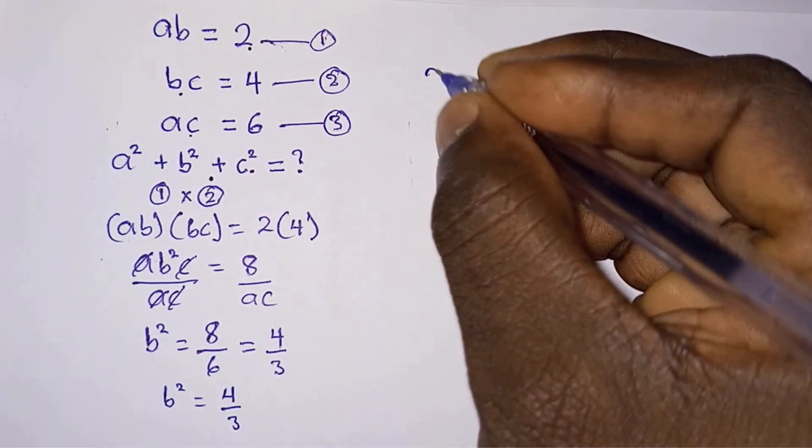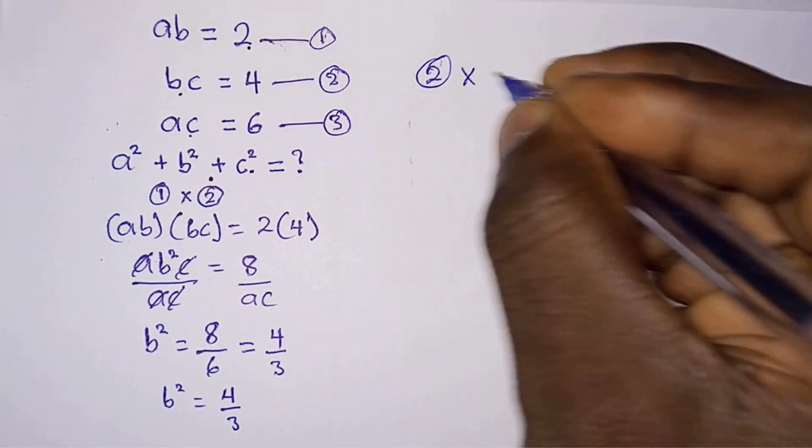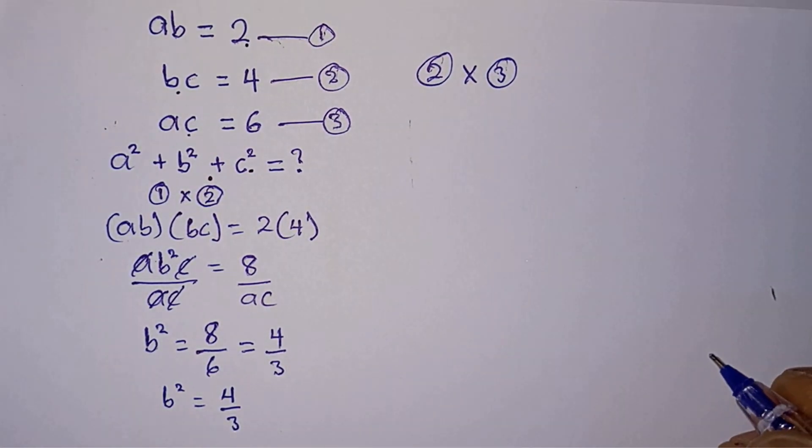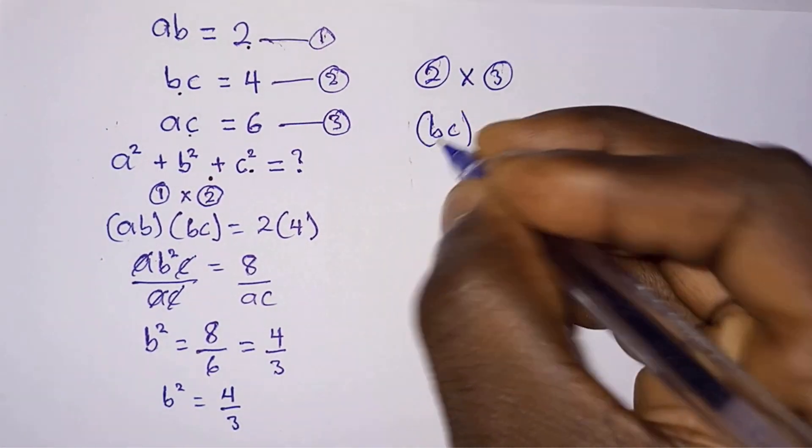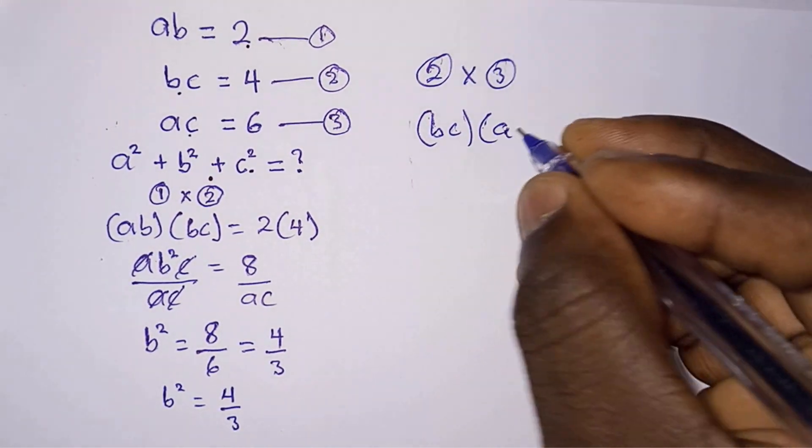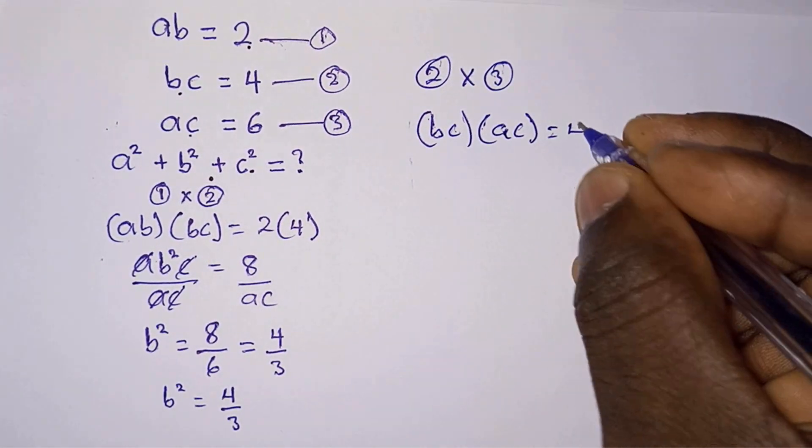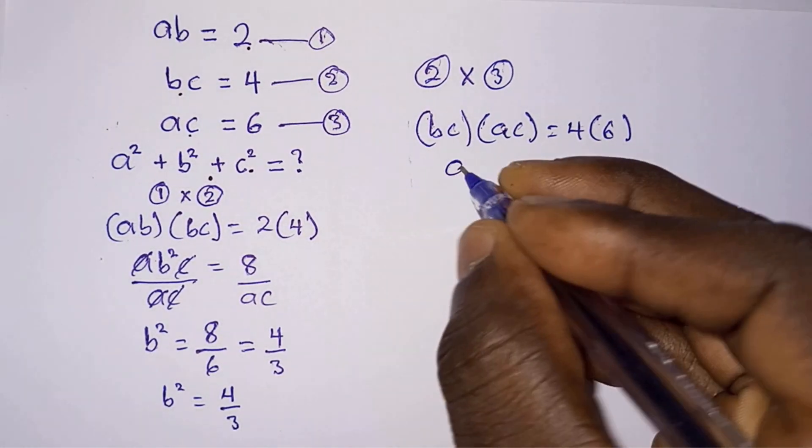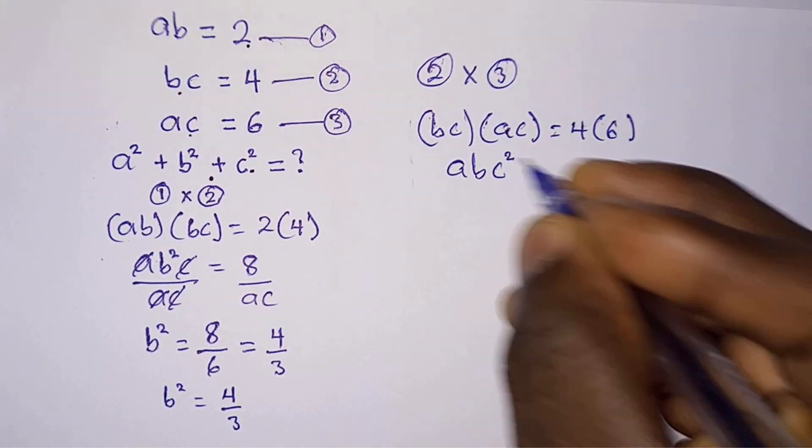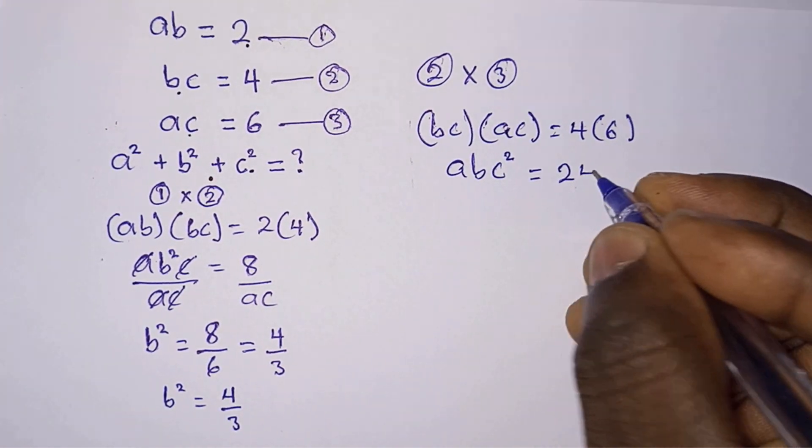Then we will also multiply equation 2 by equation 3. So we have bc times ac = 4 times 6. This gives abc² = 24.